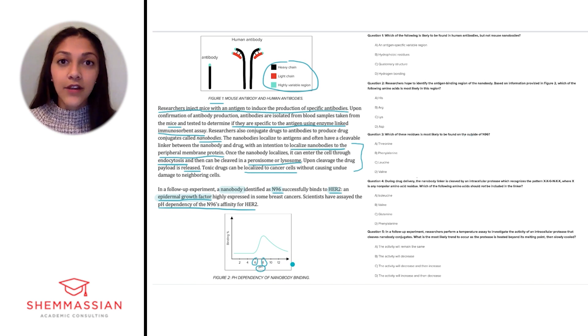So let's take a look at the questions. The first question asks us, which of the following is likely to be found in human antibodies, but not mouse nanobodies? So if we go back to the passage, we see that it's really in figure 1 that we're provided with more information to compare the structures of human and mouse antibodies.